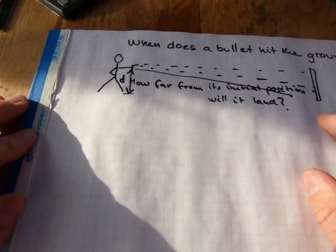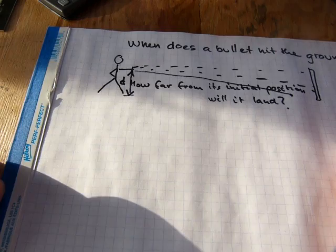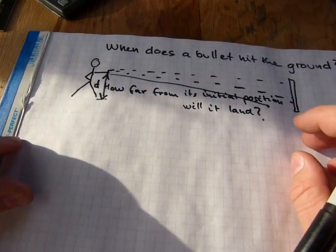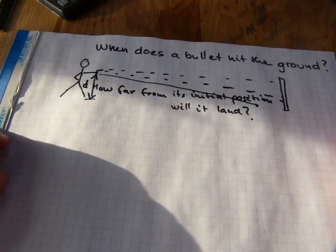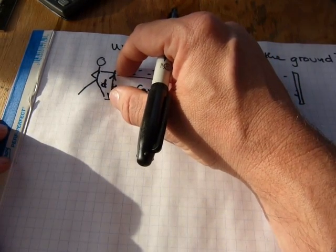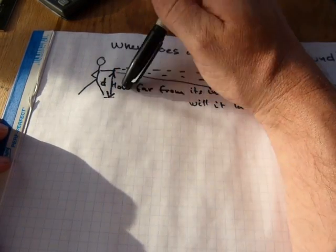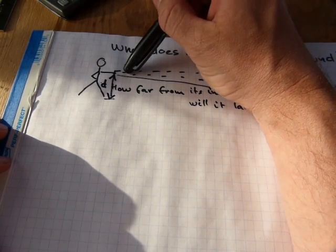Because all things fall towards the earth at the same speed, regardless of their masses and also regardless of their horizontal speed.